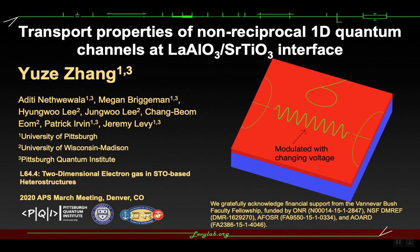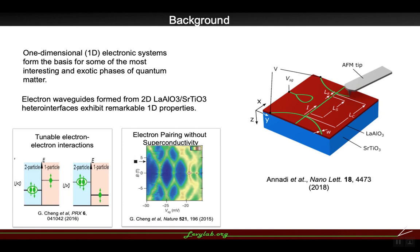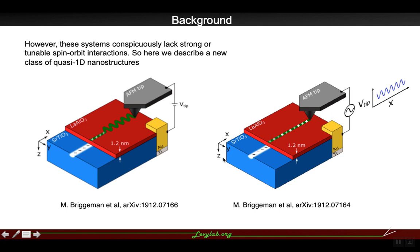Recently quantum simulation has become more and more popular, and especially one-dimensional electron systems have shown some interesting and exotic phases of quantum matter. In our group we focus on the LAO-STO heterointerface and we write nanowires at this interface, which exhibit some remarkable one-dimensional properties, particularly conductivity without electron pairing. However, this system still lacks strong spin-orbit interactions.